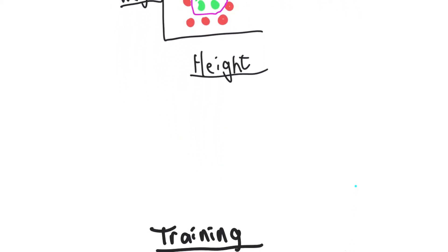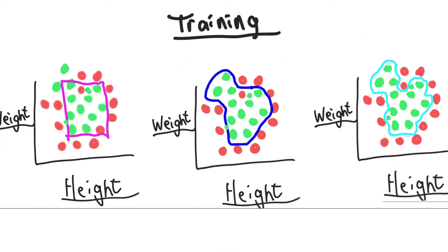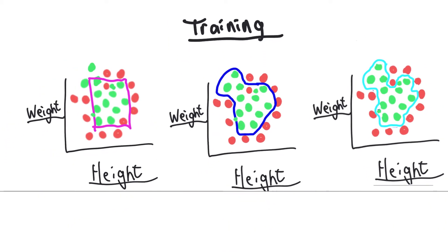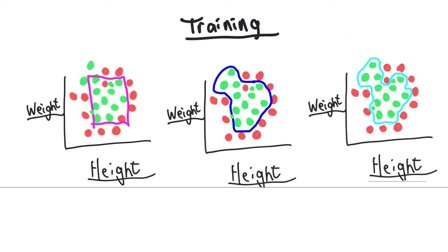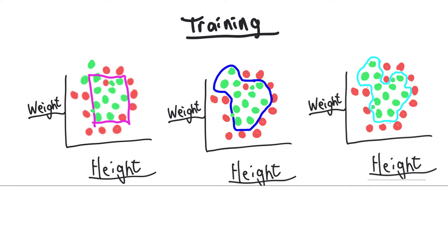Looking at training accuracy, let's say we have three different models. We have a pink model on the left, a dark blue model in the middle, and a light blue model on the right.